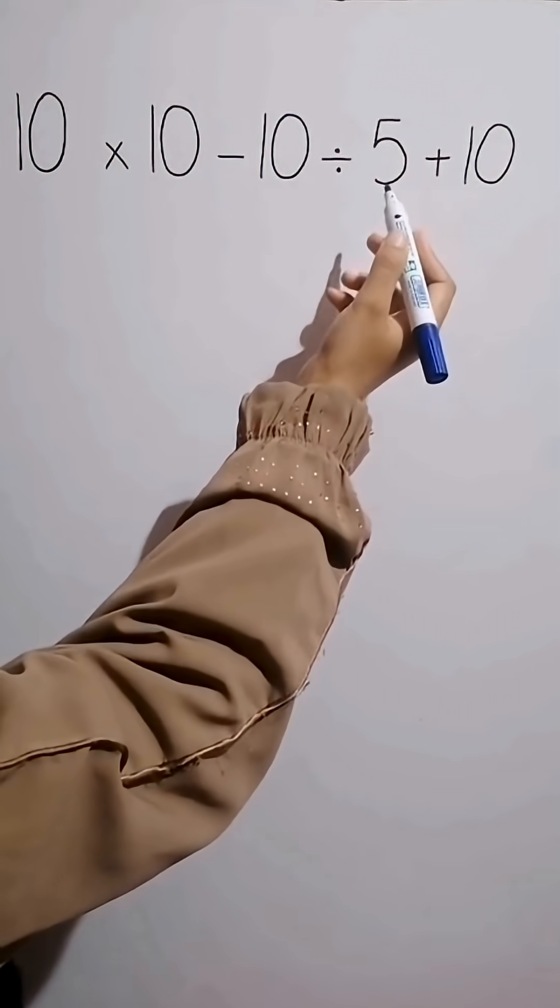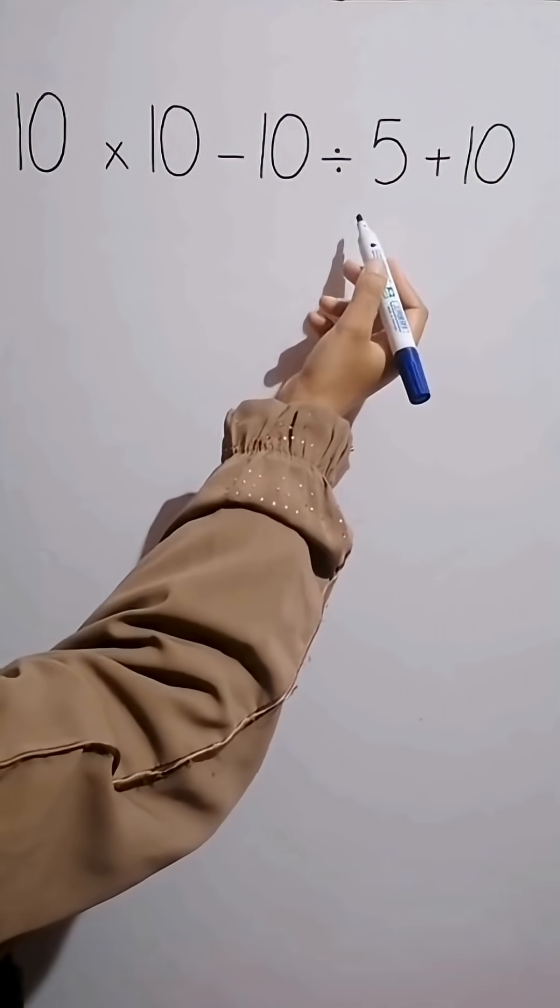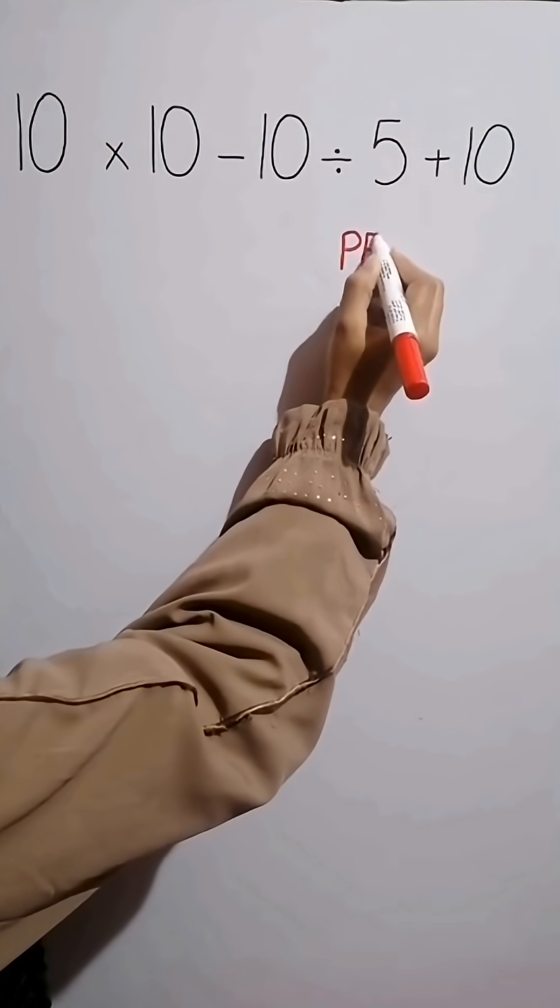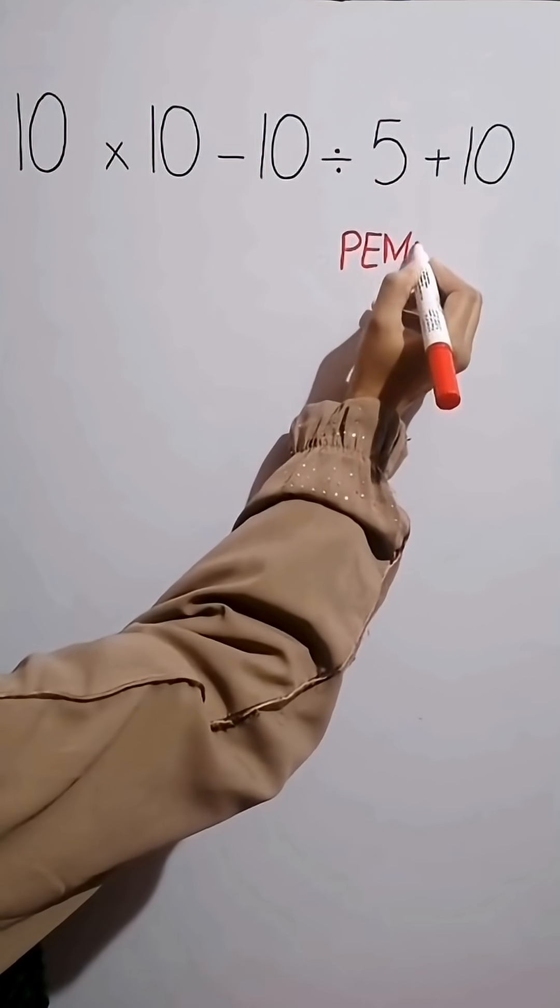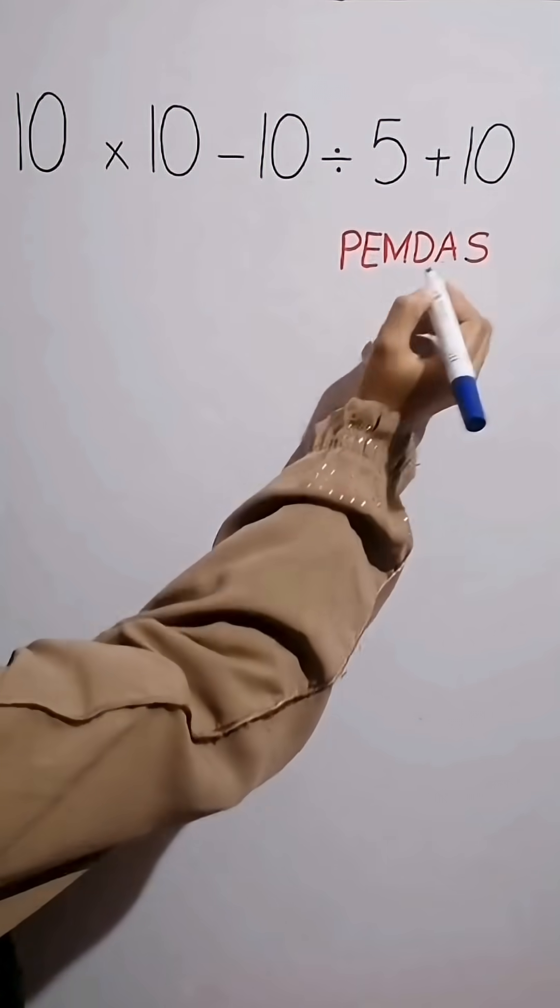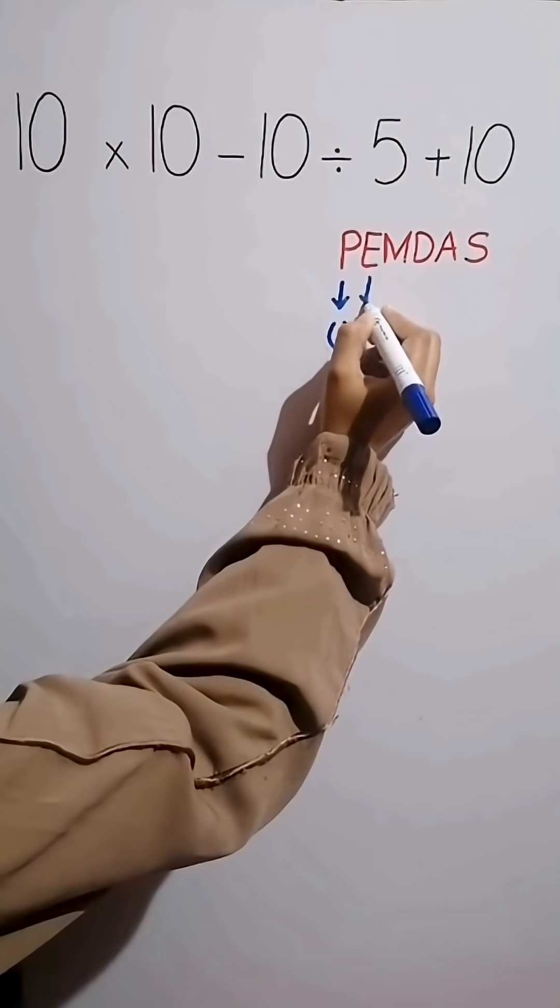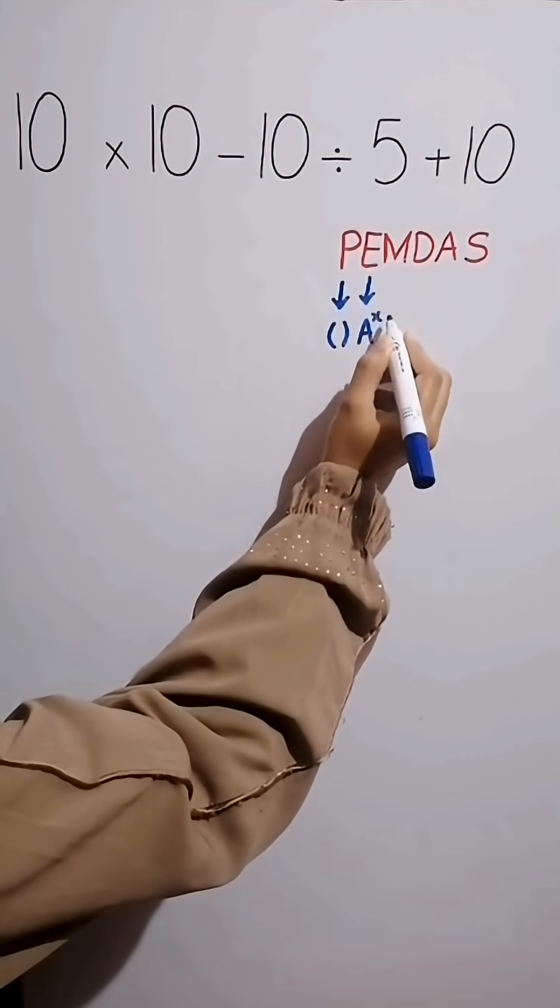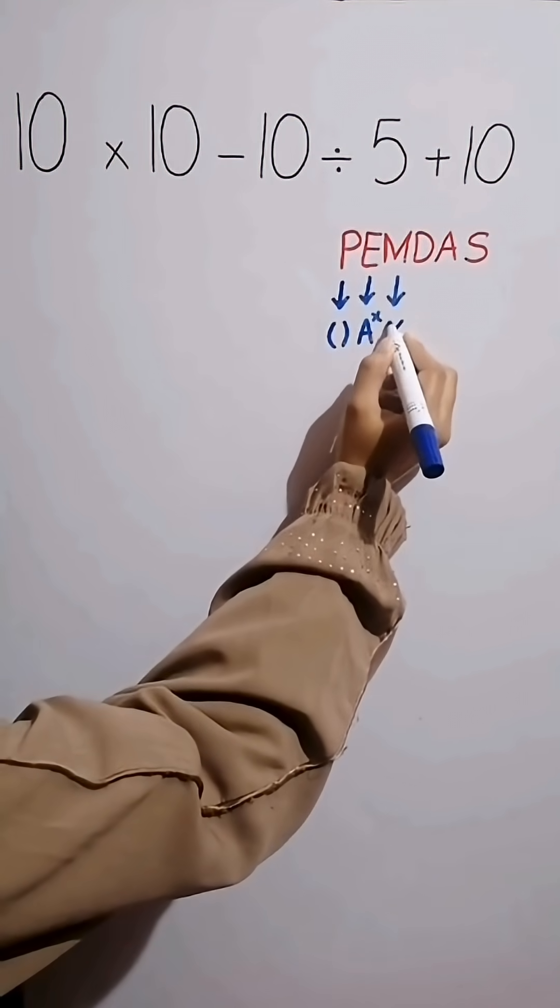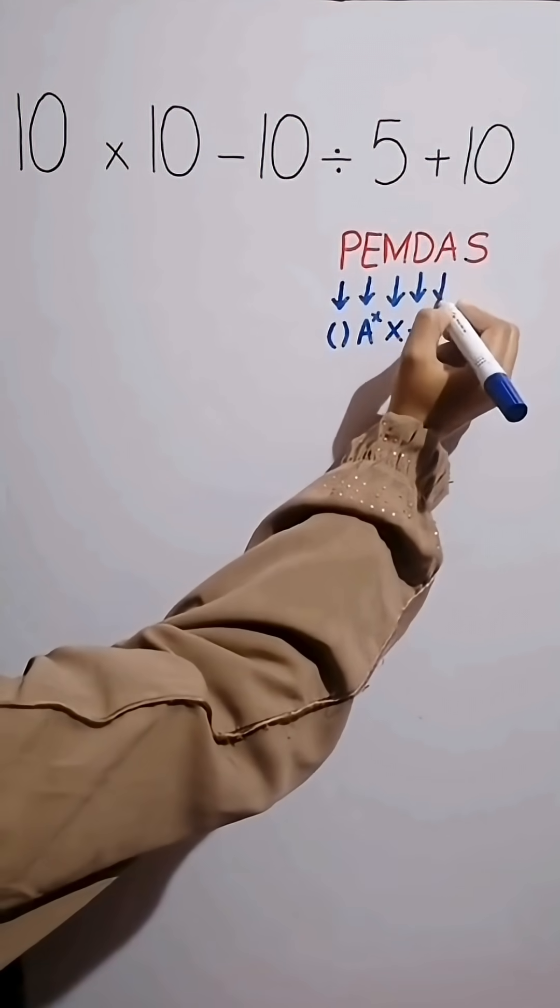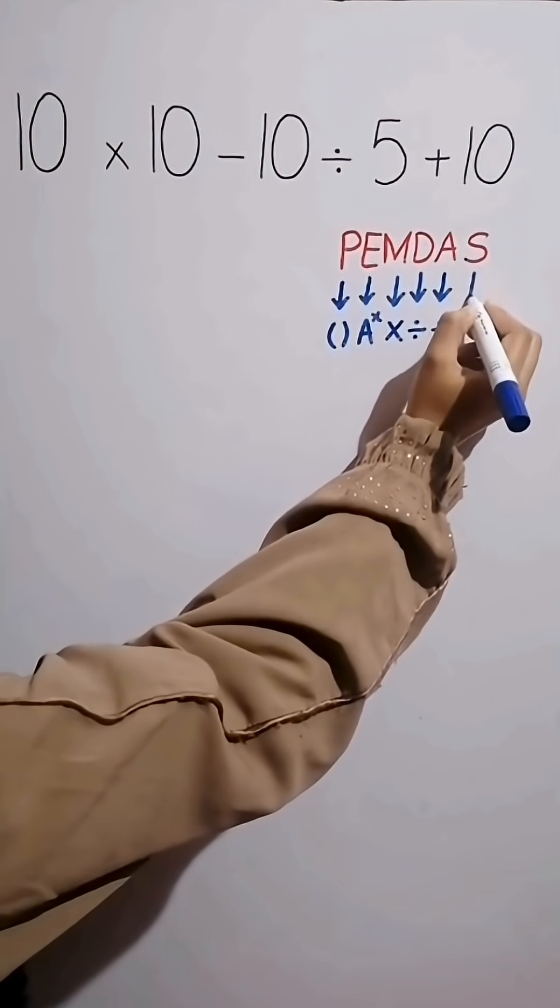To solve this question we need to follow the order of operations which is PEMDAS. PEMDAS shows the priority of mathematical operations. In this rule, P stands for parentheses, E stands for exponent, M stands for multiplication, D stands for division, A stands for addition, and S stands for subtraction.